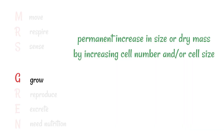All living things can grow, and this is the permanent increase in size or dry mass by increasing cell number and/or cell size. This definition distinguishes it from, for example, putting weight on, which is a kind of growing but not in the sense of the characteristics of living organisms.